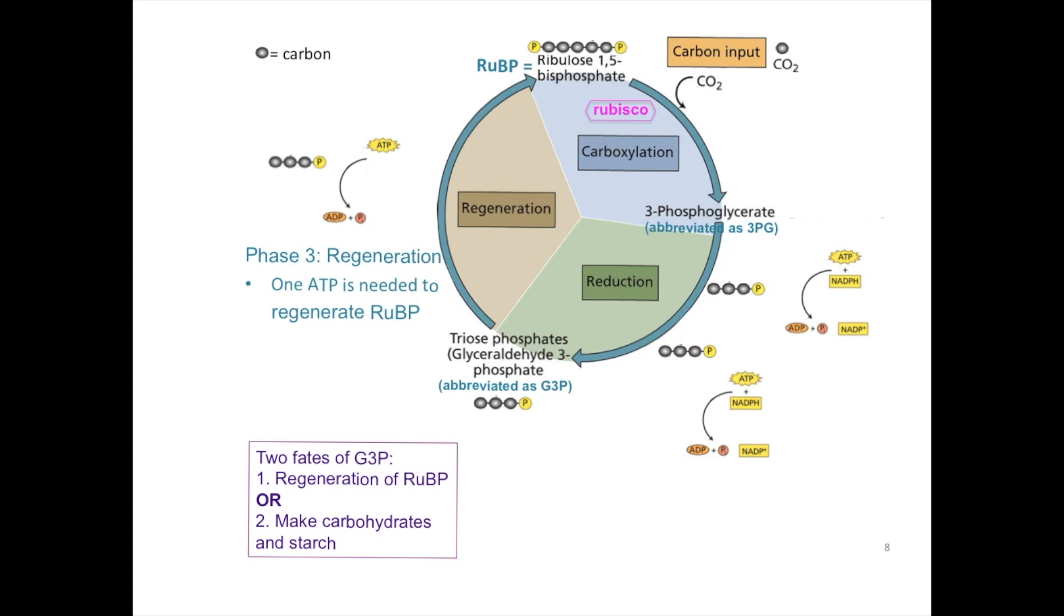It's important to note here that each G3P can have two different fates. One, it can go on to the regeneration of RuBP, or it can simply move on in order to form sugars. If it moves on to the regeneration phase, the third phase of the Calvin cycle, then we need simply one ATP to phosphorylate the newly formed G3P. At this time, we don't need any more NADPH.